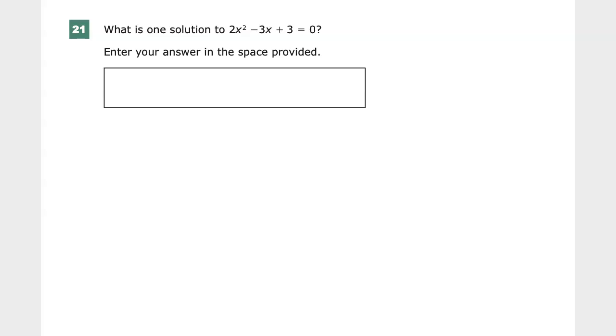This is the TN-ready practice test for Integrated Math 2, question number 21, at least in 2019 it is. The question says, what is one solution to 2x squared minus 3x plus 3 equals 0? First off, they want to know what one solution is, which means it's probably going to have more than one. This x squared would indicate that is the case, so enter your answer in the space provided.